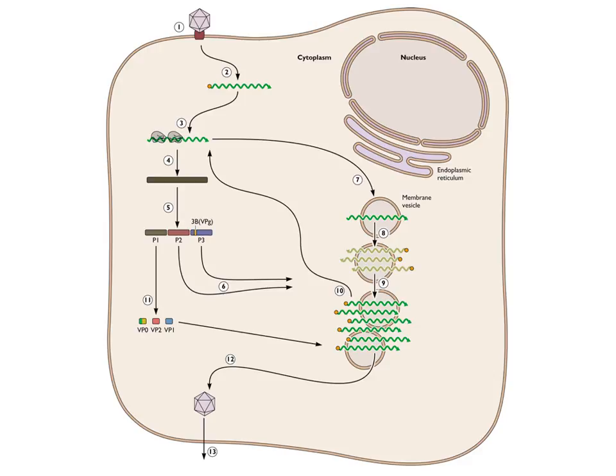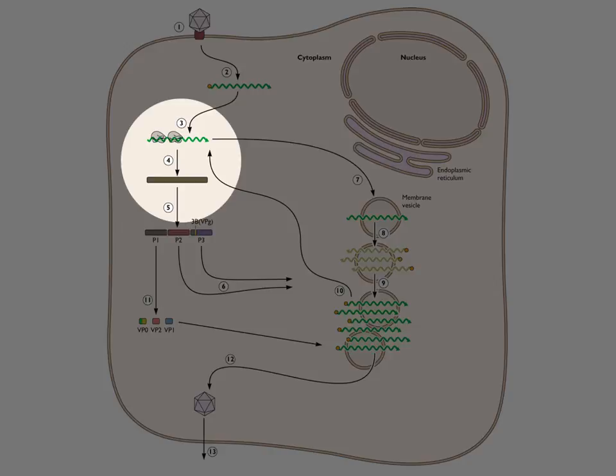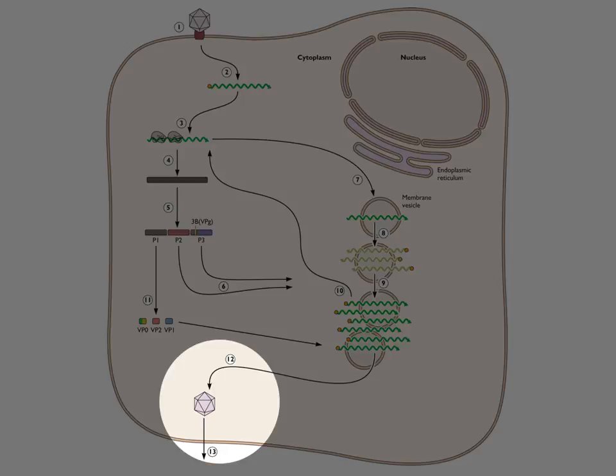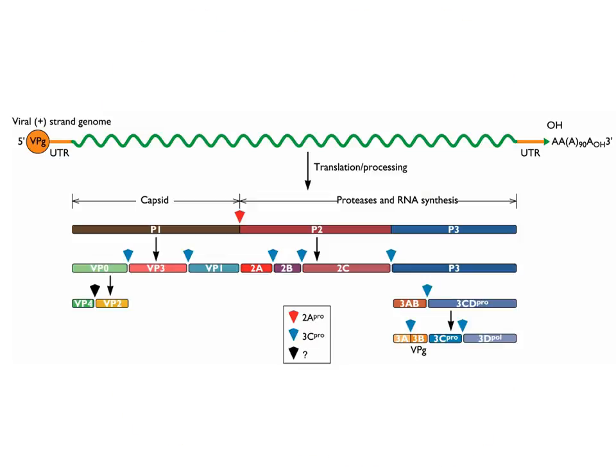This happens to be the case for all plus-strand RNA viruses — they induce the formation of vesicles. They actually take over the whole lipid machinery of the cell and divert all the membranes to their own use. The ER and Golgi actually dissolve in cells infected with these viruses, and you get small vesicles made on whose surfaces RNA synthesis occurs. This is believed to increase efficiency by concentrating all components in one area.